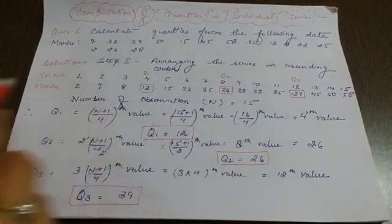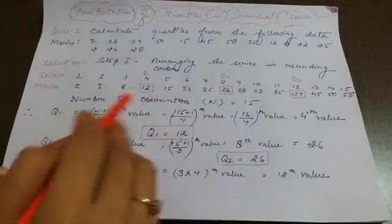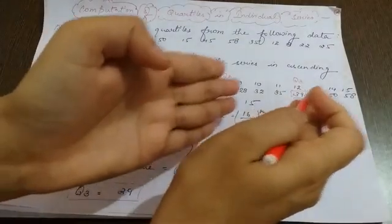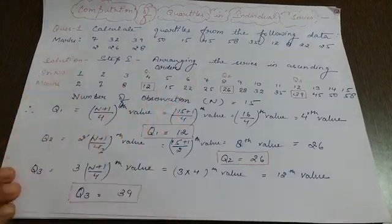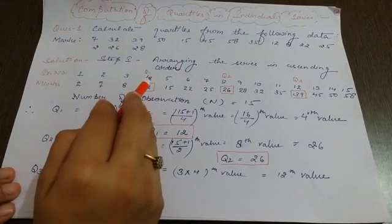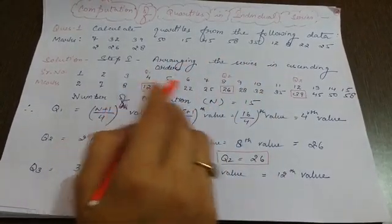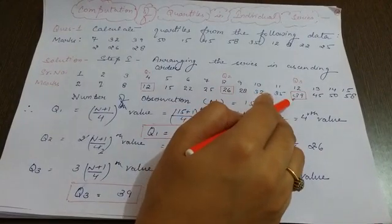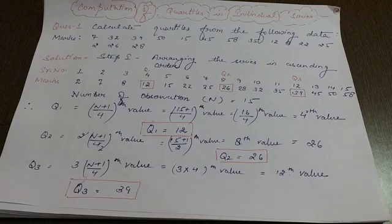With the help of these formulas, we obtain Q1, Q2, and Q3. As you can see, this whole series is divided into 4 equal parts, giving us 3 points: Q1, Q2, and Q3. Thank you everyone. In the next session, we are going to discuss the computation of quartiles in discrete series. Have a nice time ahead. Thank you.